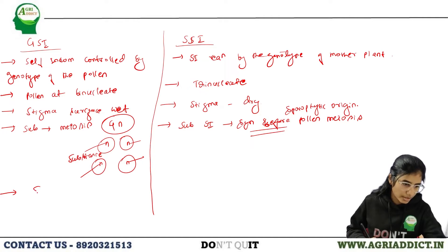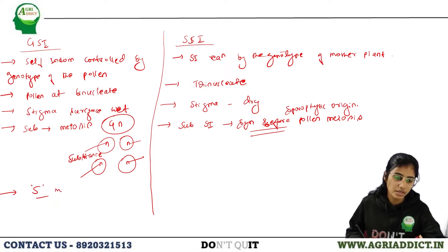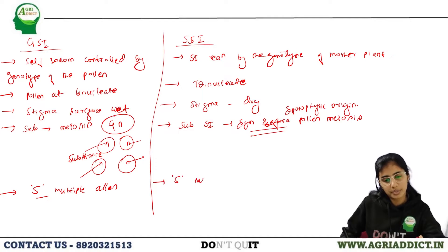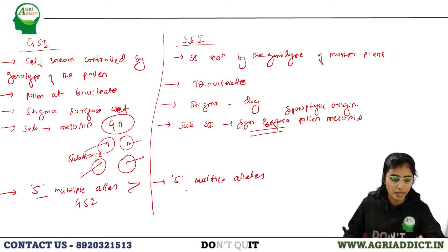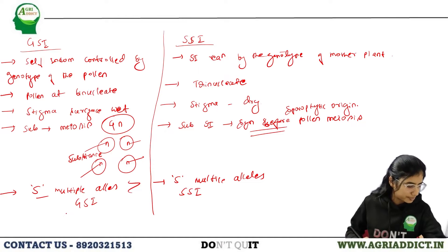In both systems, incompatibility is controlled by a single S gene with multiple alleles. However, the number of alleles is greater in gametophytic self-incompatibility than in sporophytic self-incompatibility.